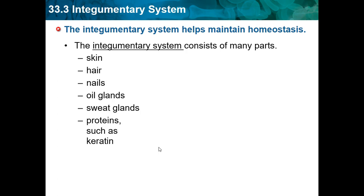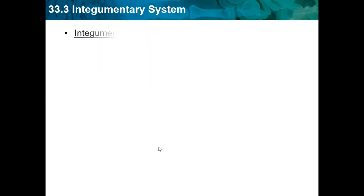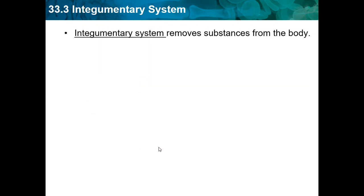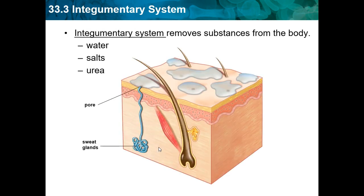The integumentary system is basically your outside body — your skin and hair physically protect you from infections. The integumentary system also removes substances from your body, such as water and salt, released through your pores as sweat.